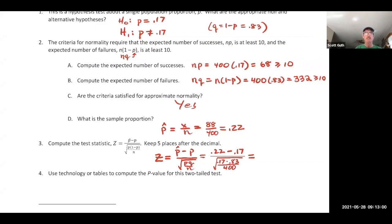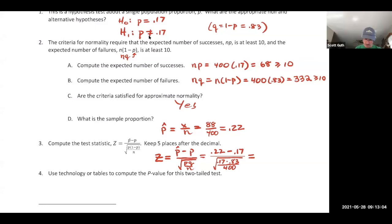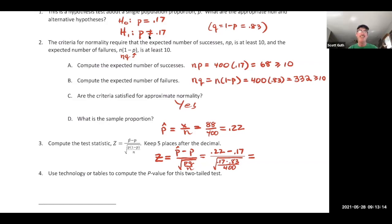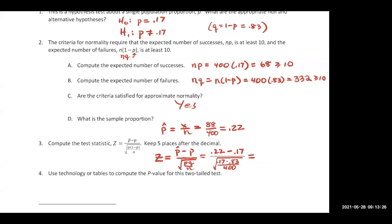A student shouts out 2.66. After confirmation from another student, the test statistic z = 2.66.